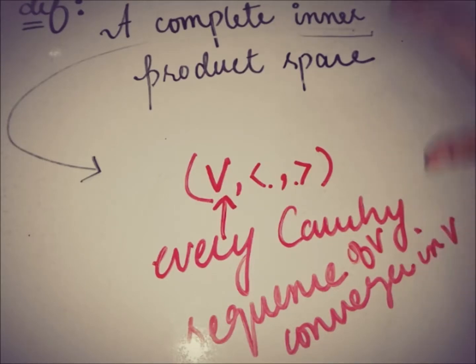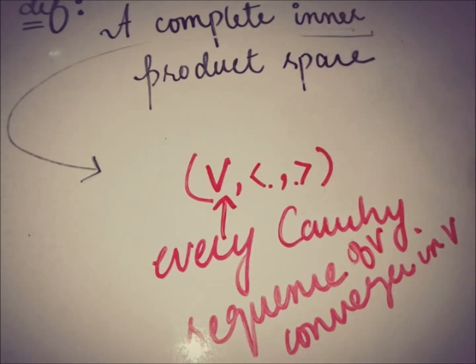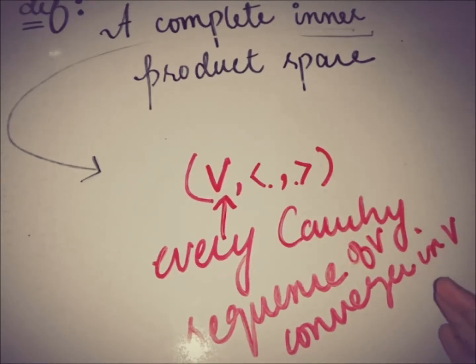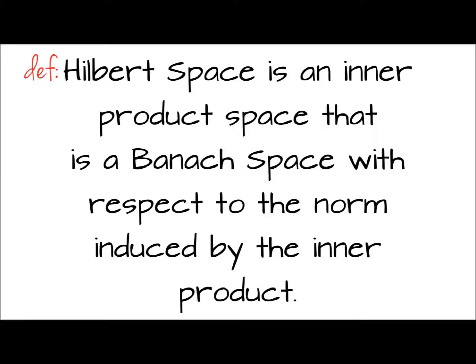So here we have a brief definition of what is meant by a Hilbert space, and this is a definition of what is meant by a complete space. There is also a very well known definition: a Hilbert space is an inner product space that is a Banach space with respect to the norm induced by the inner product.